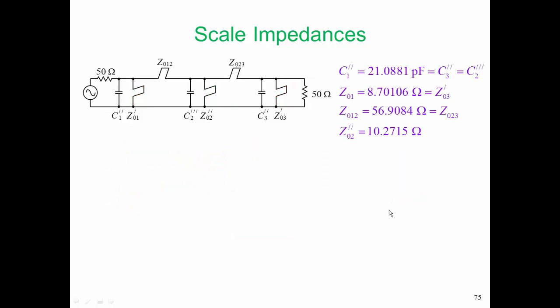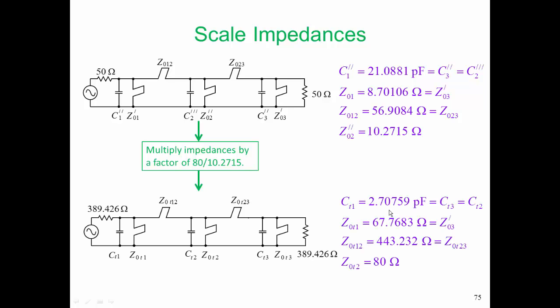Here is the prototype after step 7. We're going to multiply all of the impedances by a factor of 80 over 10.2715, and we're going to end up with this prototype at the end of this step.